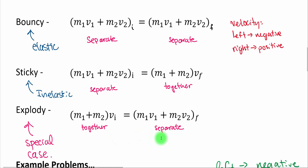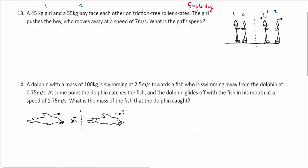We've got bouncy, sticky, explodey. Explodey is when they have the two masses together added up at one velocity. And at the end, after the interaction has occurred, the two masses have their own velocities. So it's separate in the end. But the equation that we use for that would be M1 plus M2 added up in the beginning, multiplied by whatever their common initial velocity is.